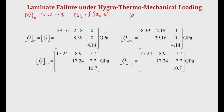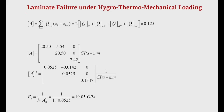There are 8 layers: 0°, +45°, -45°, 90° (symmetric), so 90°, -45°, +45°, 0°. For all 8 layers we find Q-bar: this is for the 0° layer, this for +45°, -45°, and the 90° layer. Having calculated Q-bar for each ply and knowing the values of Zk and Zk-1, we can now calculate the A, B, and D matrices.